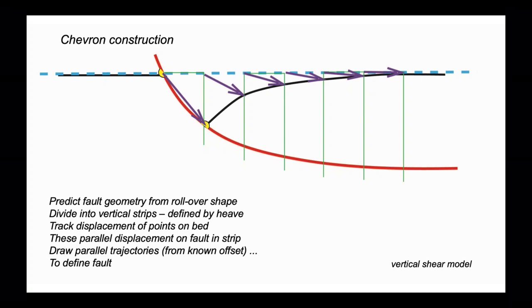This is sometimes termed the vertical shear model because the displacement trajectories are contained within these vertical strips of constant heave. There are derivations that are more complicated that have inclined shear trajectories. This is just an introduction to the array of different approaches under the Chevron construction method.